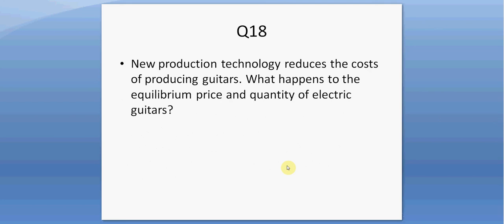Question eighteen. New production technology reduces the cost of producing guitars. What happens to the equilibrium price and quantity of electric guitars? The supply curve shifts right, pushing down the equilibrium price but increasing the equilibrium quantity.